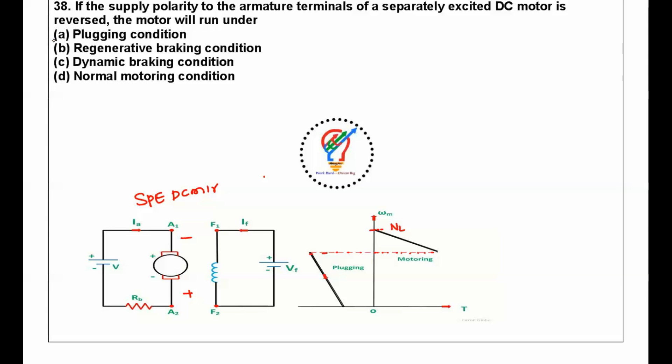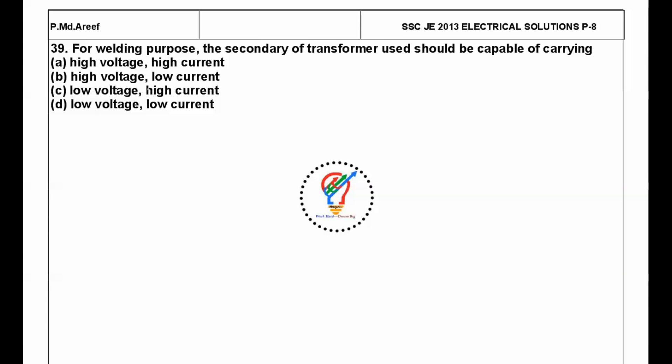Next question: for welding purpose, the secondary of transformer used should be capable of carrying what? Generally, the requirement of welding applications is they require high current at low voltage.